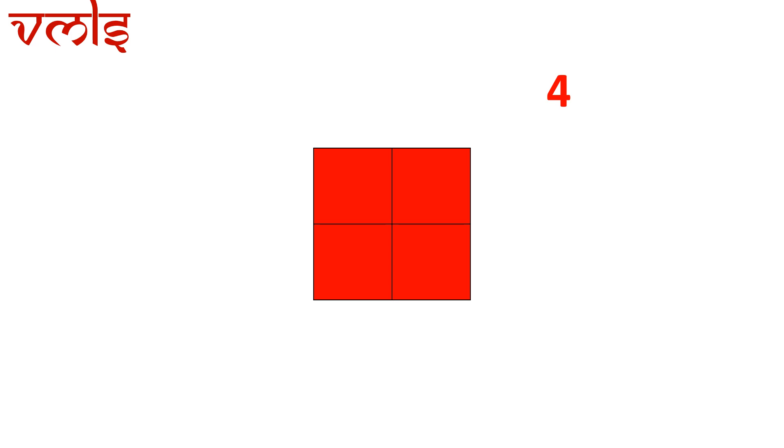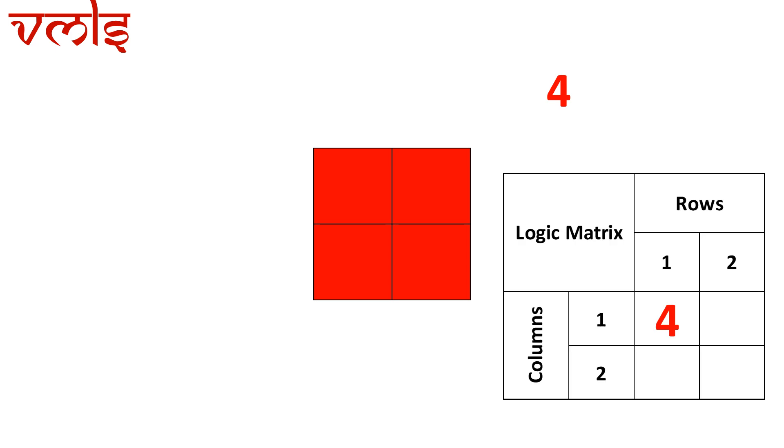So whenever I am identifying rectangles, I am considering squares as well. This is a 1 by 1 matrix. When we talk about the logic matrix, we count one row and one column that will give me four rectangles in the form of four squares.